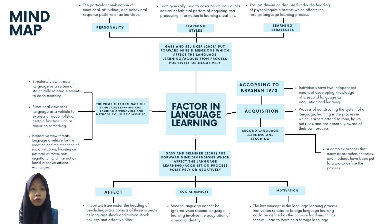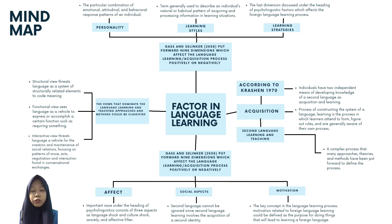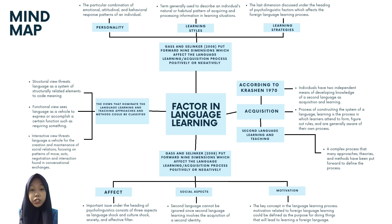The last dimension is learning strategies, discussed under the heading of psycholinguistics factors which affect the foreign language learning process. A learning strategy is the general approach to learning and using information. Learning strategies consist of four main components: cognitive strategies, which involve the manipulation of learning material; metacognitive strategies, which involve higher-order strategies such as analyzing, evaluating, and organizing the learning process; social strategies, which involve interpersonal behavior aimed at increasing the amount of foreign language communication with native or non-native speakers; and affective strategies, which involve taking control of the emotional condition and experiences that shape one's subjective involvement in learning.